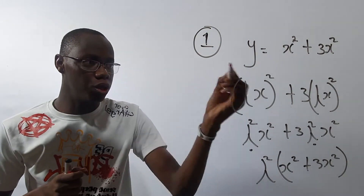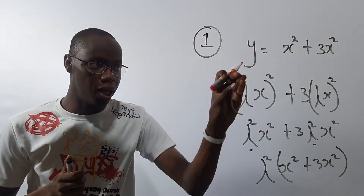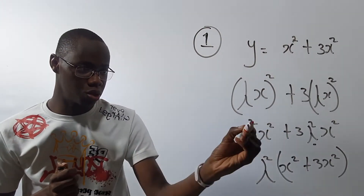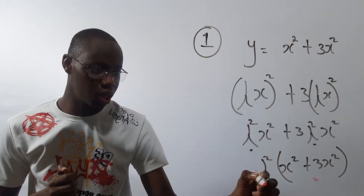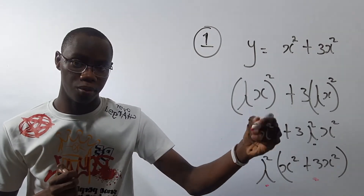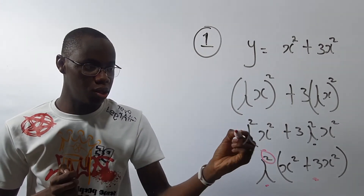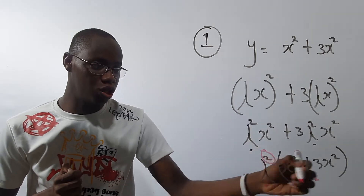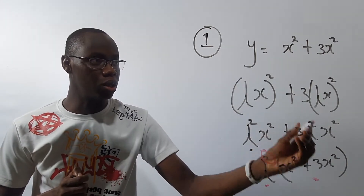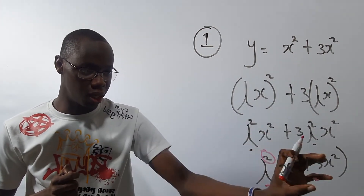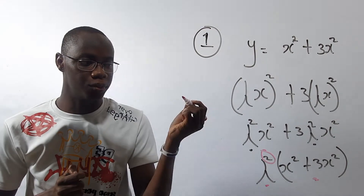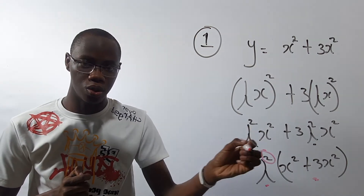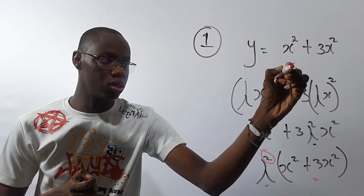Do you notice something? When I multiplied everything by lambda — all the variables inside — and used my indices rules and factorized lambda outside because 2 and 2 is common, I'm getting the same thing back. So lambda² multiplied by this — I'm getting the same equation back. I can write this as y = x² + 3, which equals y. Therefore this function is homogeneous to the degree 2, so k is equal to 2.